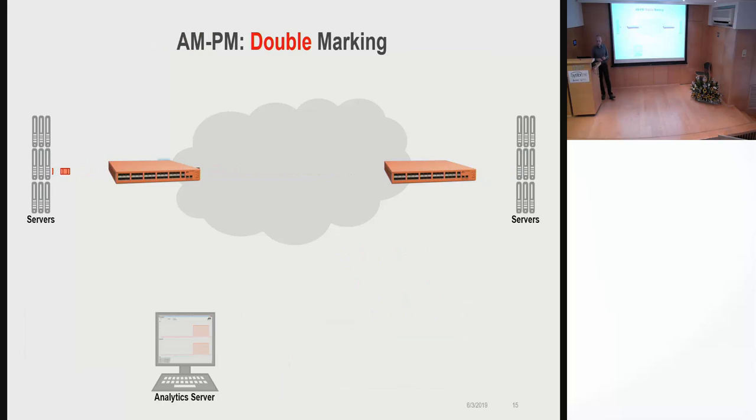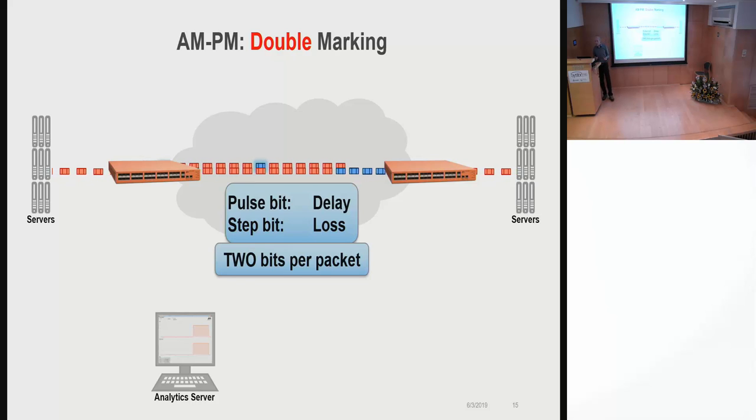There's also double marking. Double marking uses two bits in the header of each data packet. You have one bit which uses the alternate marking idea, the other bit which uses the pulse marking idea. Alternate marking is used for loss measurement, pulse marking is used for delay measurement. Now we have both these metrics measured accurately, but we need two bits per packet, so it's more expensive obviously.